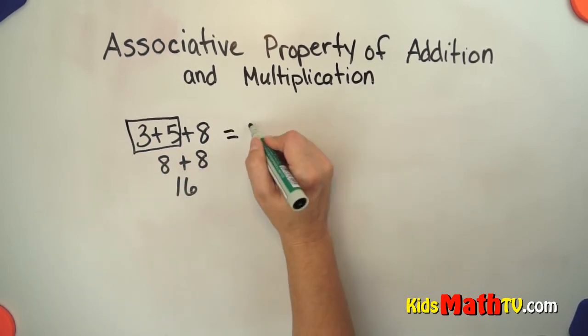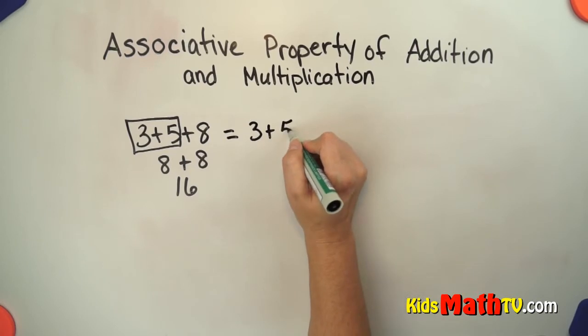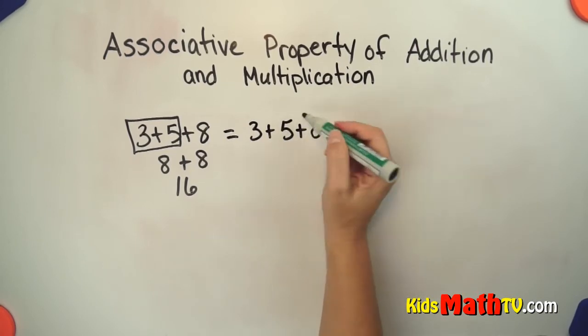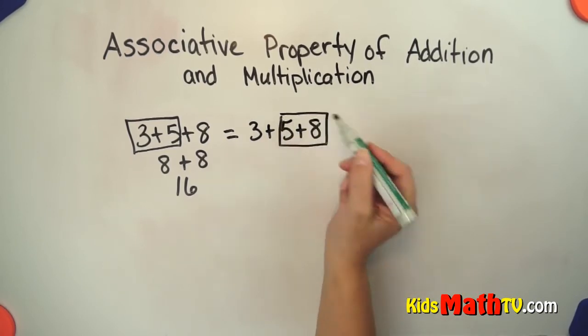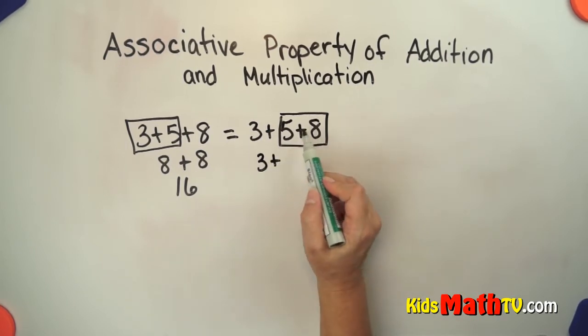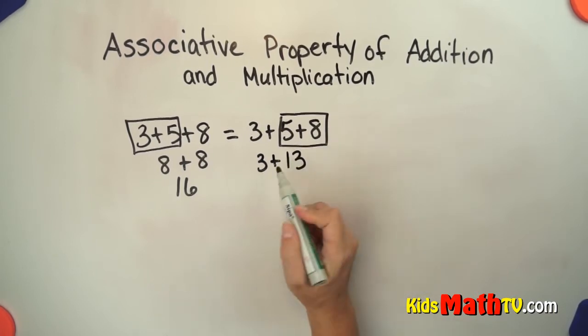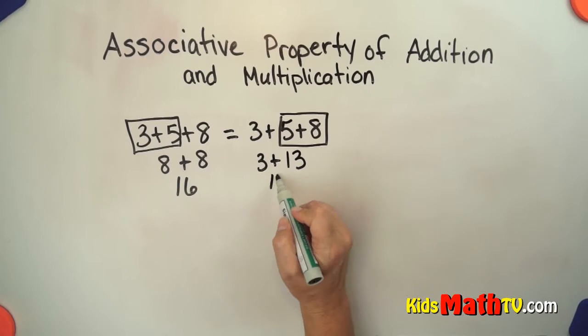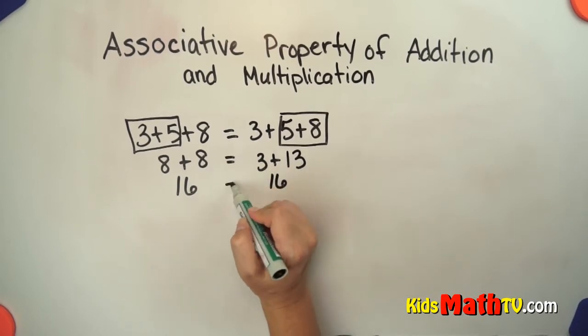That should be the same as 3 plus 5 plus 8, but in this case let's group these together, the 5 and the 8. So we're going to go 3 plus 5 and 8 is 13, 3 plus 13 is 16, they are equal.